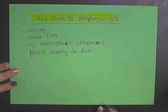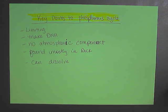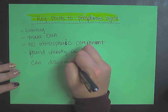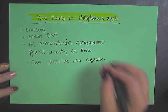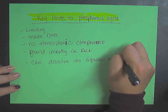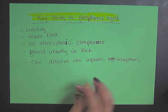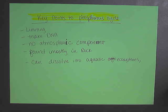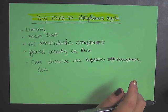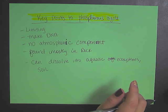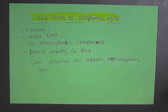Plants are going to be able to use it to make DNA, and then from there it can go into the herbivores that eat the plants. It can dissolve into aquatic ecosystems, and when the organism dies it will decompose and reintroduce that back into the soil. But if it does end up in aquatic ecosystems, it can lead to algal blooms if there's an excess of phosphorus in the system.